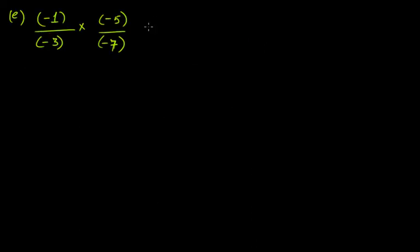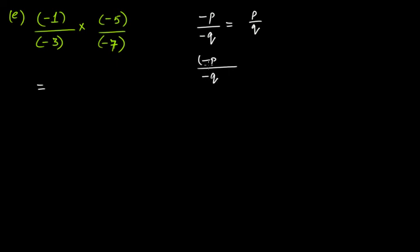In this case you have minus 1 over minus 3 and minus 5 over minus 7. Remember, whenever your rational number is in the form minus p over minus q, this is actually p over q. If you multiply both the numerator and denominator by minus 1, you get the equivalent rational number without any negative signs.